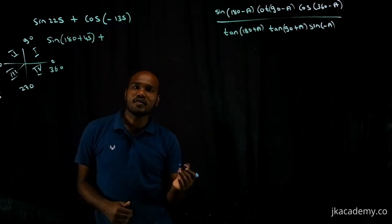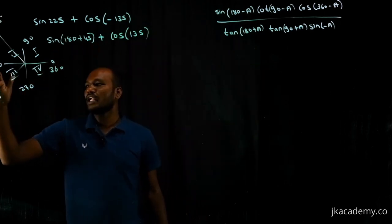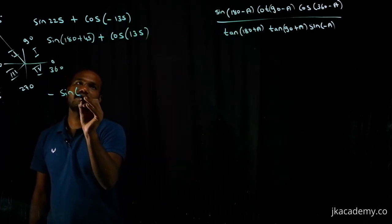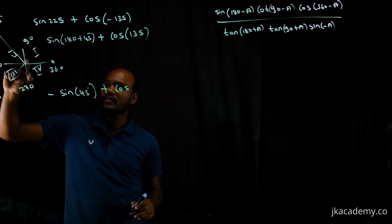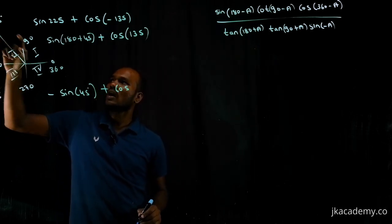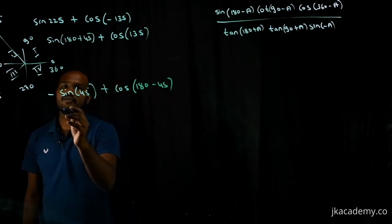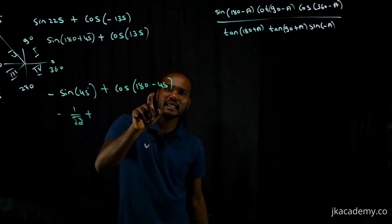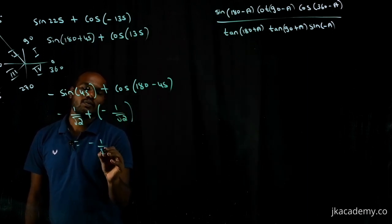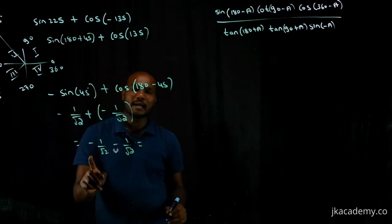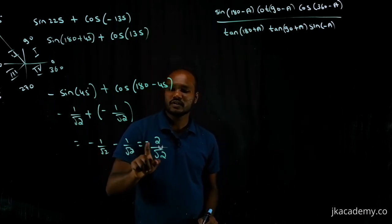cos(−θ) = cos(θ), so cos(−135°) becomes cos(135°). sin(180° + 45°) is in the third quadrant where sine is negative, so it gives −sin(45°) = −1/√2. cos(135°) is in the second quadrant: 180° − 45°, and cosine is negative in the second quadrant, so cos(135°) = −1/√2. Therefore −1/√2 + (−1/√2) = −2/√2, which is the answer.